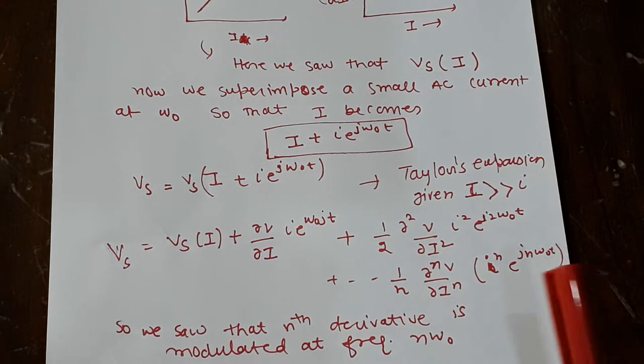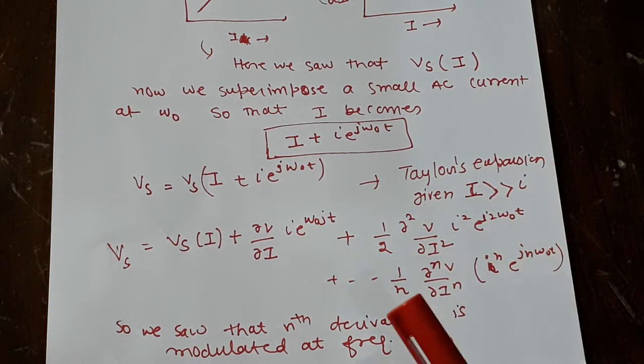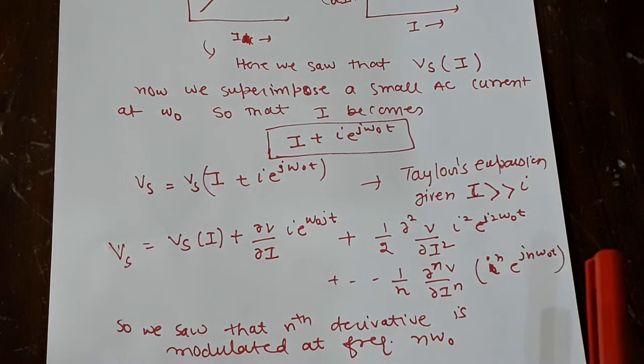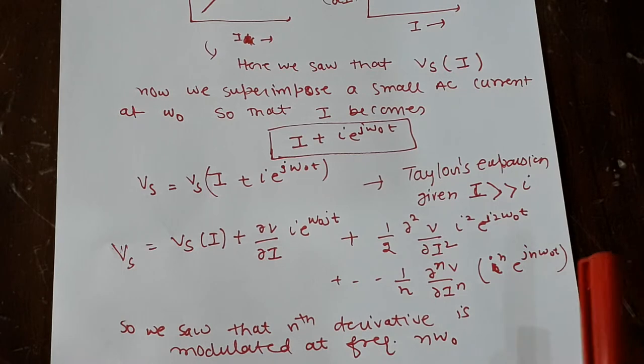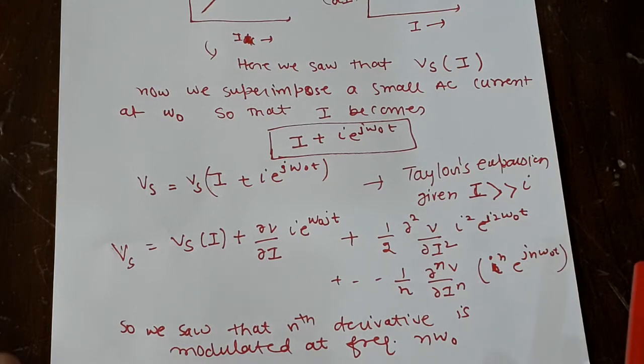Now, you are measuring the second derivative, you need to measure at 2ω. So if you want to measure the third derivative, you need to measure at 3ω and so on. If you want to measure n-th derivative, you have to measure at nω. Of course, you are modulating the signal at frequency ω₀, but you have to measure at 1ω for first derivative, 2ω second derivative, 3ω for third derivative.